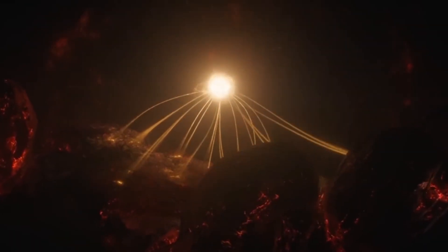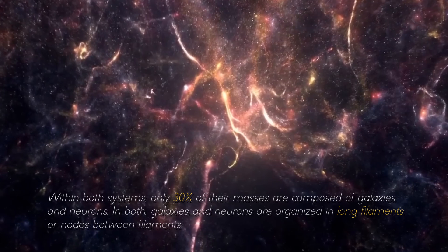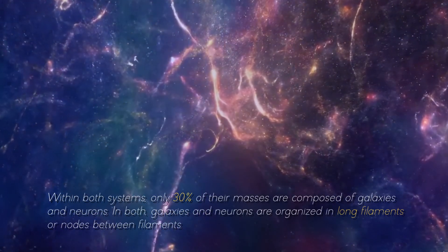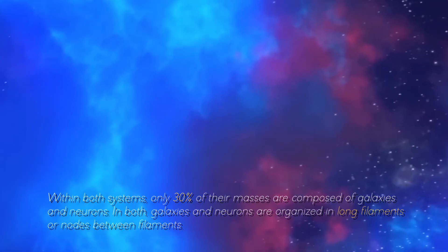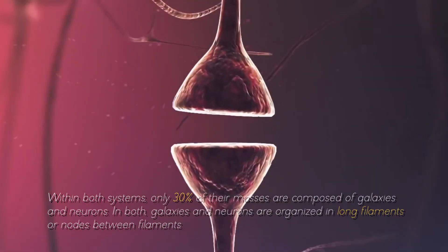Thus, it is not that our brain is like a universe, or that the universe is a brain of titanic proportions, but that their dynamics are similar. Within both systems, only 30% of the masses are composed of galaxies and neurons. In both, galaxies and neurons are organized in long filaments and nodes between filaments.